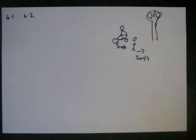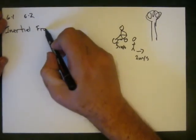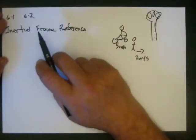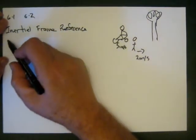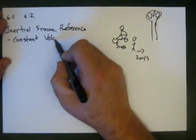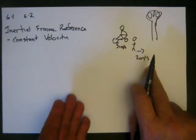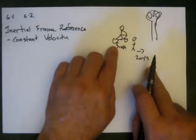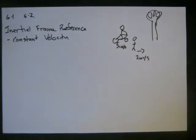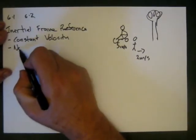We're also going to talk about inertial frames of reference. We try to do everything in an inertial frame if we can — there are also non-inertial frames which we'll discuss shortly. The key thing about an inertial frame is it has constant velocity. If I'm walking at two meters per second and not accelerating, that's an inertial frame. The cyclist at five meters per second is also an inertial frame. Constant velocity means no acceleration.